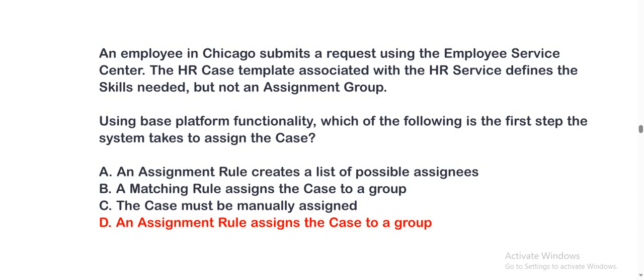An employee in Chicago submits a request using the employee service center. The HR case template associated with the HR service defines the skills needed but not an assignment group. Using base platform functionality, which of the following is the first step the system takes to assign the case? Option A: an assignment rule creates a list of possible assignees. Option B: a matching rule assigns the case to a group. Option C: the case must be manually assigned. Option D: an assignment rule assigns the case to a group. The correct option is D.